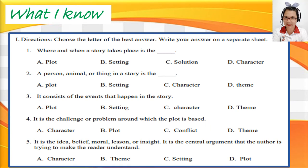Let's review the elements of a literary text. Answer the five questions in What I Know. Number 1: Where and when a story takes place is? The correct answer is letter B, Setting. Number 2: A person, animal, or thing in a story is? The answer is letter C, Character.